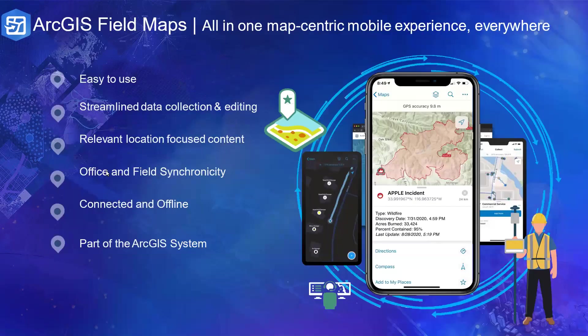This brings us to ArcGIS Field Maps — an all-in-one application that allows data-driven field data collection, helping mobile workers perform data collection and editing, find assets in the field, and report real-time locations. Because it's built on ArcGIS, everyone — whether in the field or in the office — benefits from using the same data. No one is working with data outside of the system; everyone is pulling from the same ArcGIS Online accounts and databases.